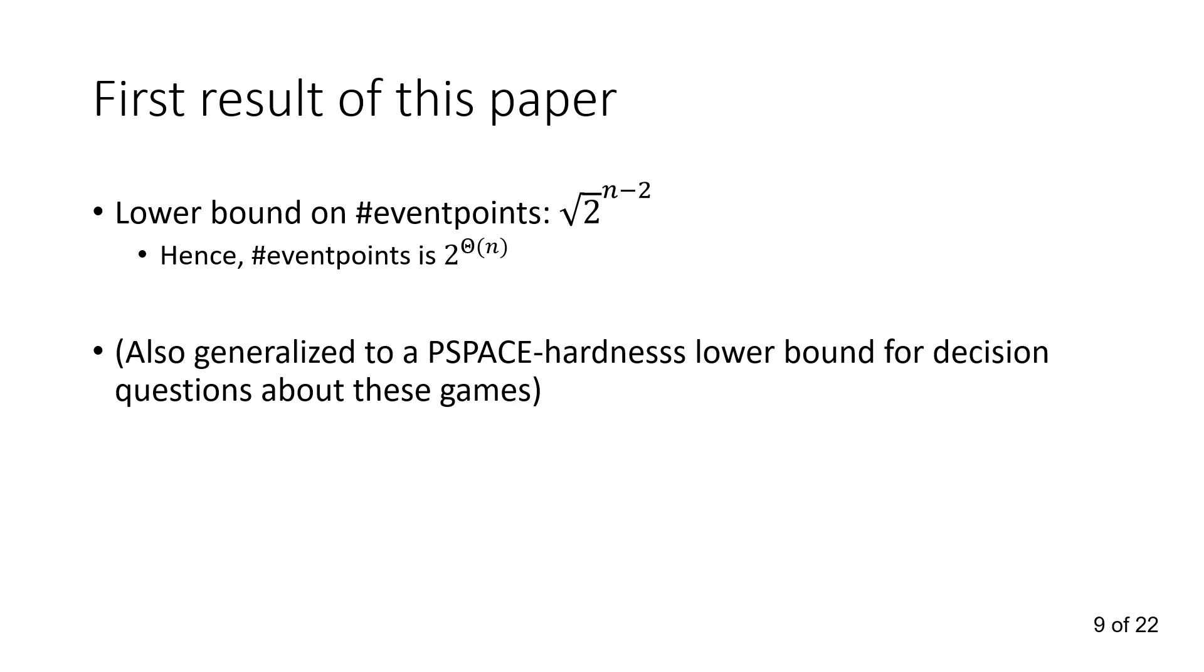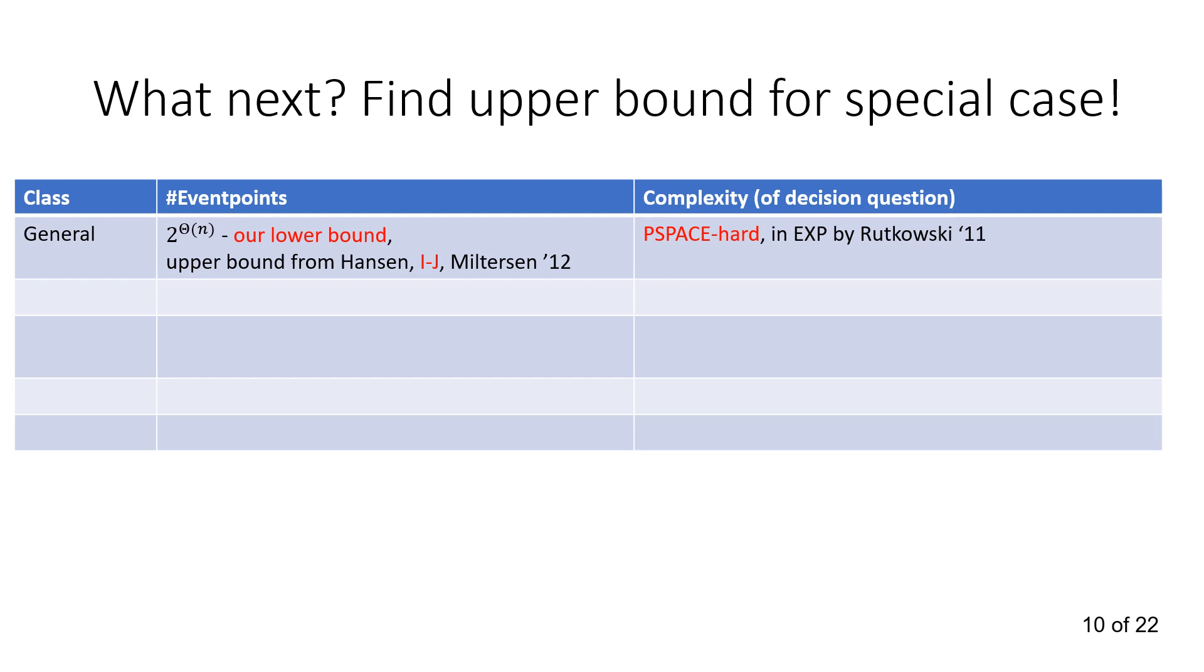So the main result of our paper is a lower bound on the number of event points of square root of 2 to the n minus 2. Hence, the number of event points is 2 to some constant times n, with a bit of a gap between the two. We also generalize that to a PSPACE hardness lower bound for decision questions about this game. But next, well, we have shown a good lower bound, therefore we should show a good upper bound for a special case.